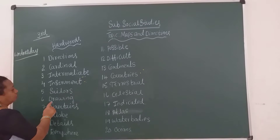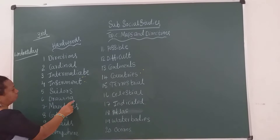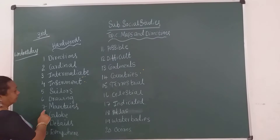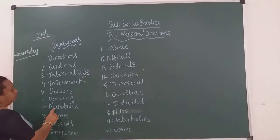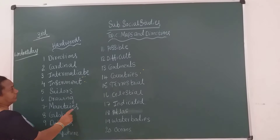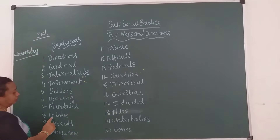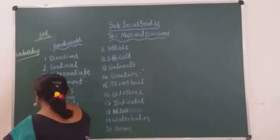Sixth one: drawing. D-R-A-W-I-N-G, drawing. Seventh one: mountains. M-O-U-N-T-A-I-N-S, mountains. Eighth one: globe. G-L-O-B-E, globe.